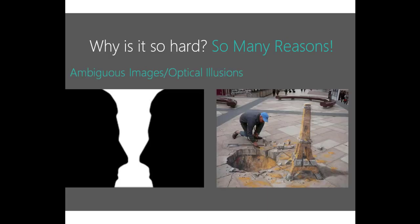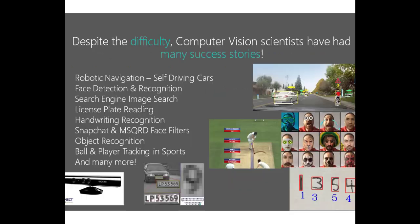Ambiguous images or optical illusions are another problem which computer vision faces today. Despite these difficulties, computer vision scientists have had success in different fields and domains.